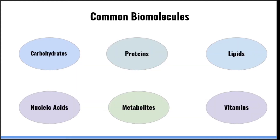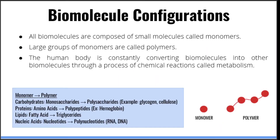We're going to talk about carbohydrates, nucleic acids, proteins, lipids, vitamins, and metabolites. But before we start going into details, it is important to discuss the general configurations that biomolecules may take. All biomolecules are made up of smaller basic molecules called monomers. Any molecule made up of more than one monomer is a polymer. Most of the essential biomolecules are made up of elementary monomers.